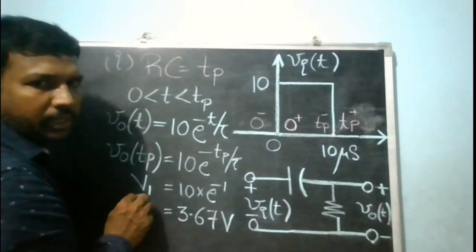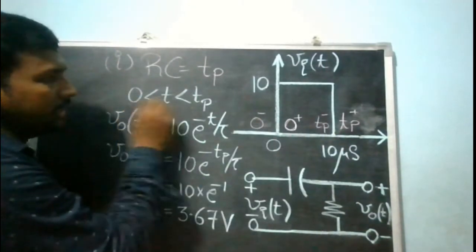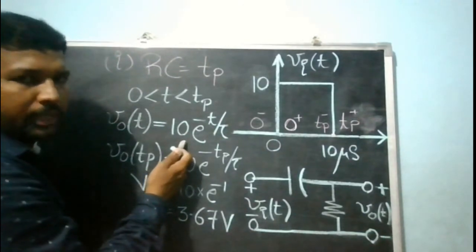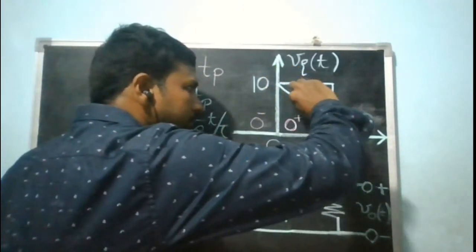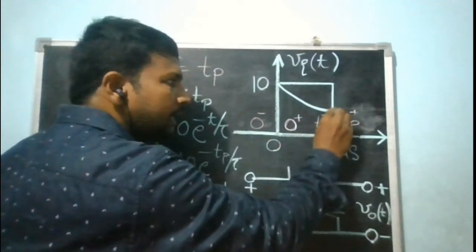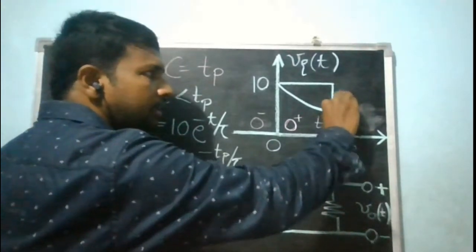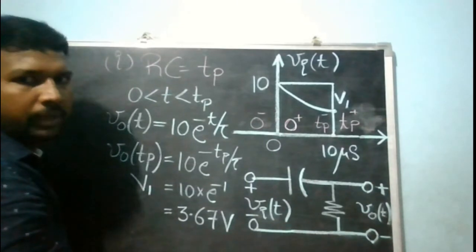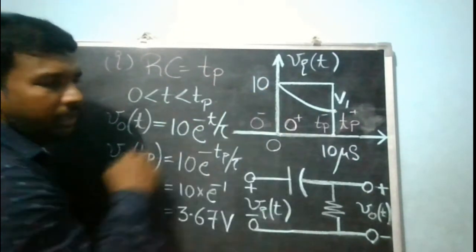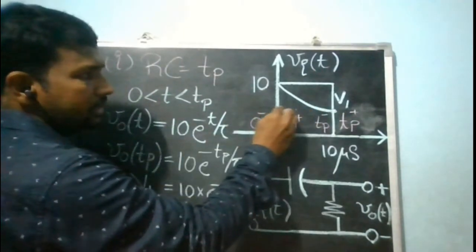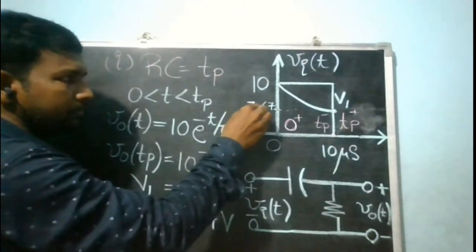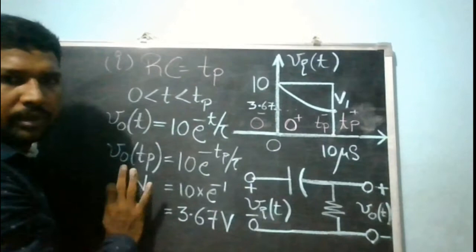V1 is the output voltage at t equal to tp minus, which evaluates to approximately 3.67 volts. So the output waveform over 0 to tp takes a discharging form starting at 10 volts and reaching V1 equal to 3.67 volts at t equal to tp.